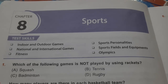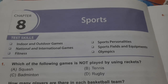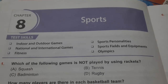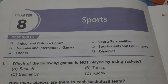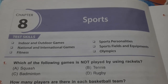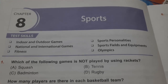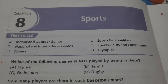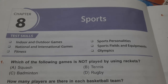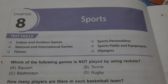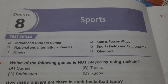Sports personalities — so sports mein jo famous sportsmen hain unke baar mein. National and international games: national is played within the country, so India mein jo games khele jata hai national level pe. International games are out of India, out of the country you live in. Sports fields and equipments — so sports mein fields kaun se hote hai, tracks, etc., and equipments such as pad, ball, racket, etc.